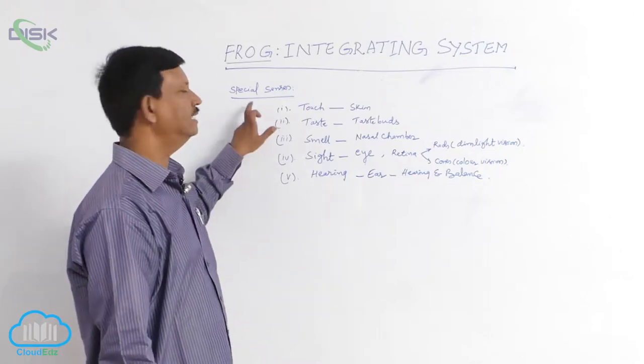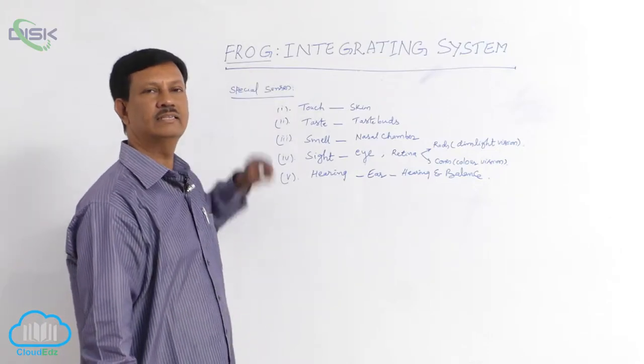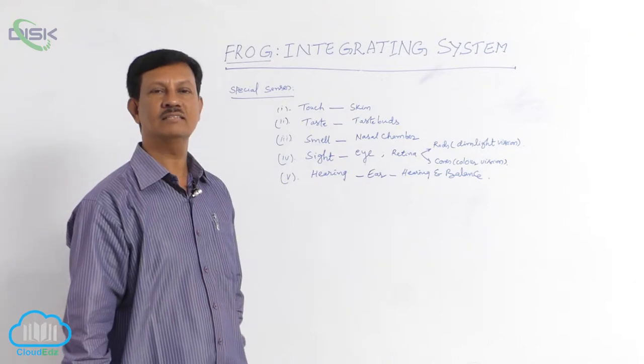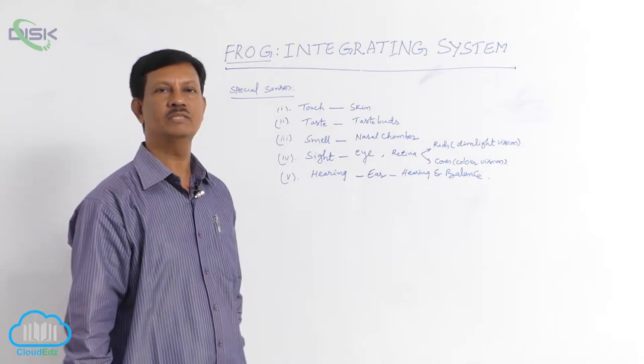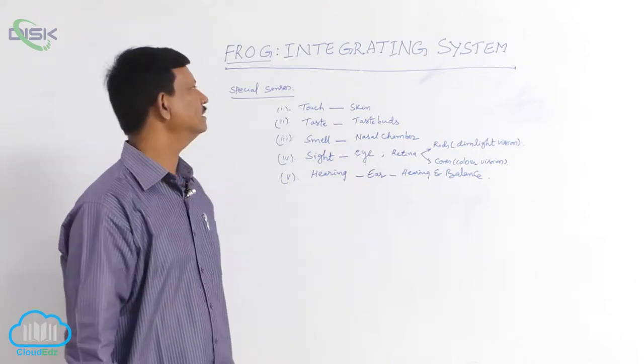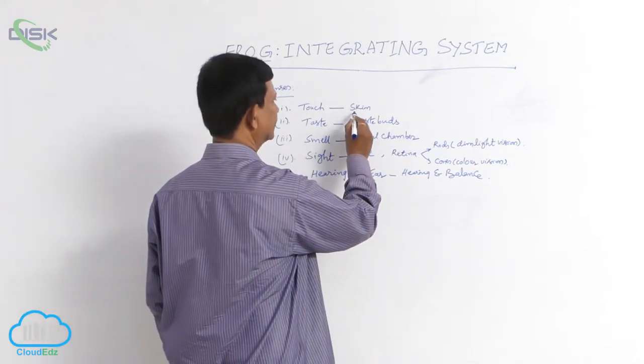Sense organs are well developed in frogs. There are different types of sense organs present on different parts of the body. The important sense organs are skin,